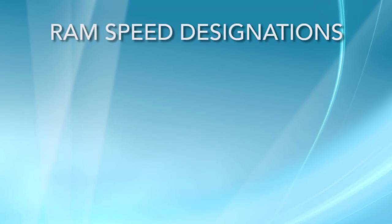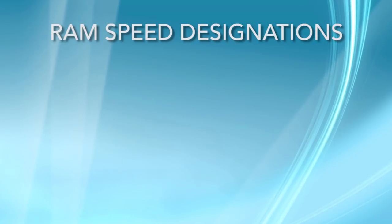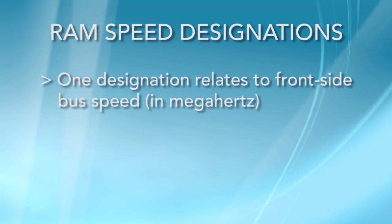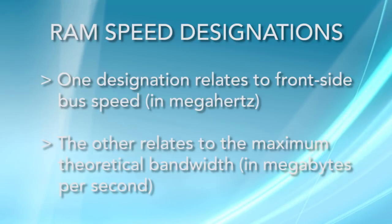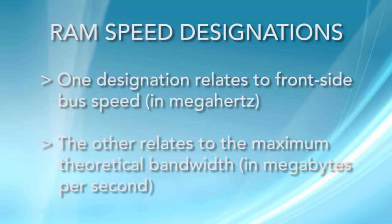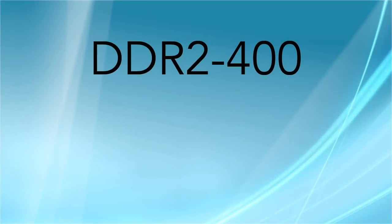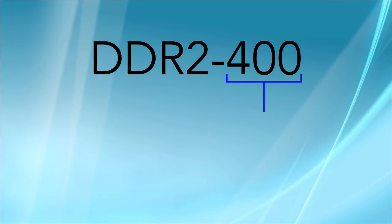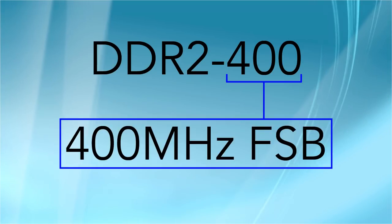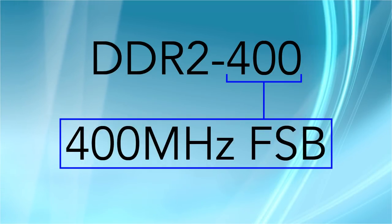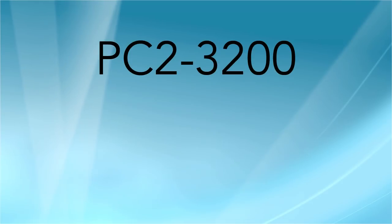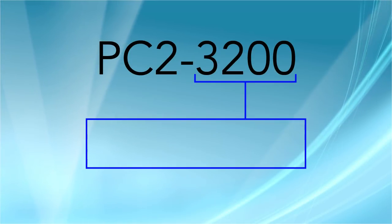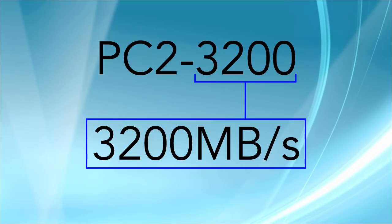So today's memory is designated by two numbers. One relates to the frontside bus speed, and the other relates to the maximum theoretical bandwidth. For instance, the name DDR2-400 refers to a 400 MHz frontside bus speed. But that same module can also be called PC2-3200, which refers to its maximum data transfer rate of 3200 MB per second.